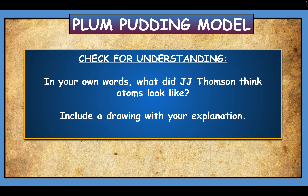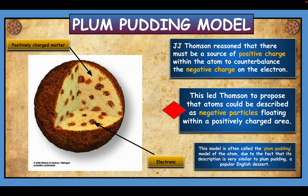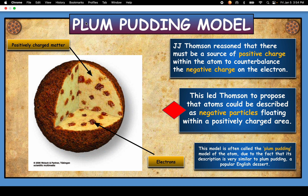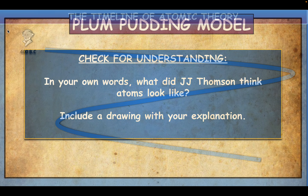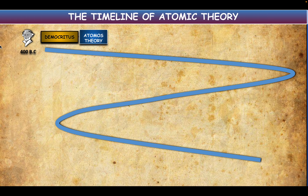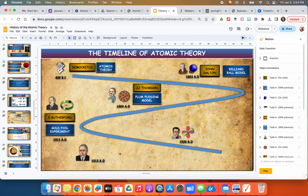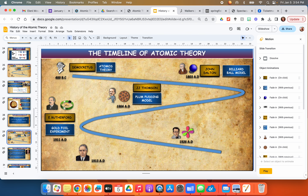This led Thompson to propose that atoms could be described as negative particles floating within a positively charged area. This is what I want you to remember and be able to restate in your summary: there is positively charged matter—the cookie dough—and within that, pieces of negatively charged particles called electrons. The check for understanding here is: in your own words, what did JJ Thompson think atoms looked like? Include a drawing in your explanation. Look at that marked box and the models in the top left and top right corners of the slide.